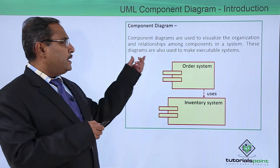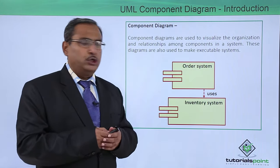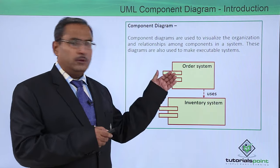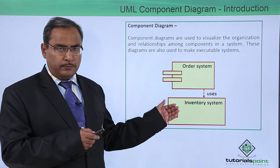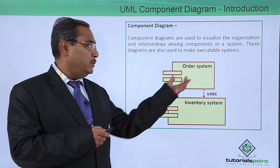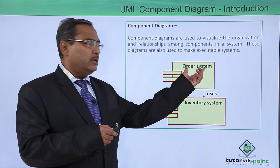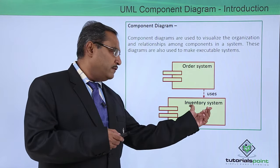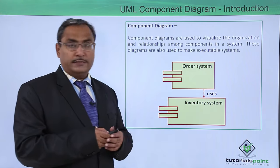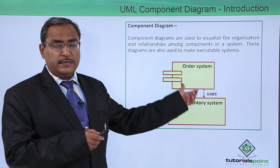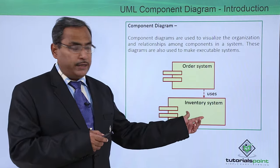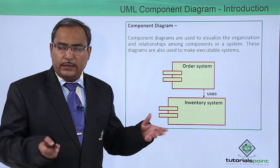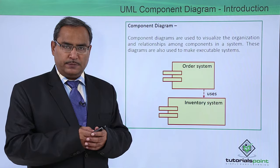These diagrams are also used to make executable systems. Here we have one component diagram for an order management system. There is one component called the order system and another called the inventory system, because the order system uses the inventory system while ordering items.